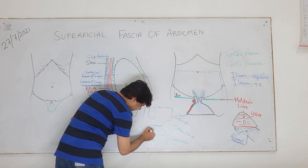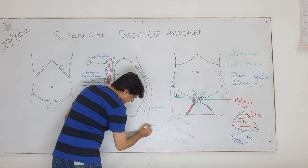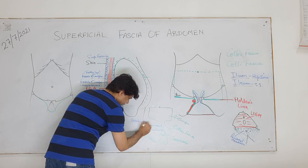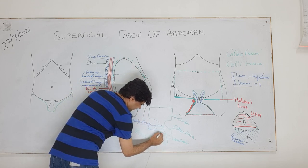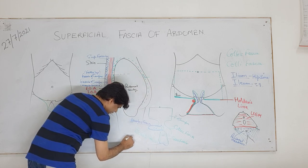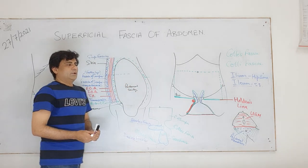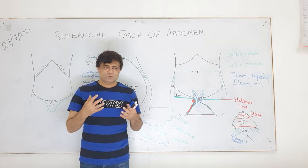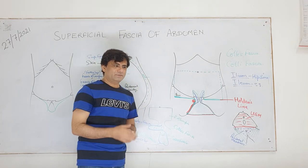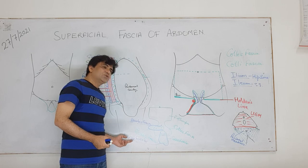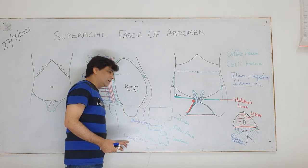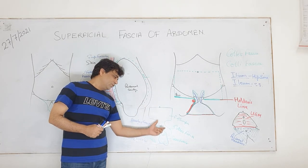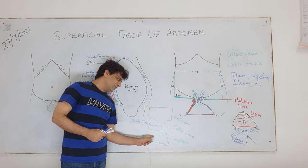At the same time there was a fatty layer above - fascia of Camper - which also lines the penis. This fascia of Camper lining the penis will be called dartos fascia. In the perineum it becomes very thinned out, and in the genitalia it is devoid of fat, but in the scrotum it develops muscle inside - that's why it's called dartos fascia. The superficial fascia of the penis is also dartos fascia.